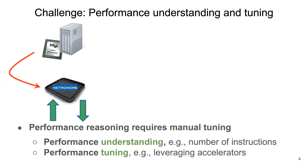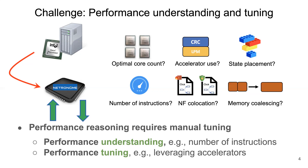To start with, developers would like to know the expected offloading performance before too much effort goes into the manual porting process, so that they can make decisions on whether the SmartNIC is a good offloading target. Additionally, developers might also want to leverage platform-specific tuning opportunities, such as hardware accelerators, specialized compute units, and heterogeneous memory regions with different access latencies. These are all challenging tasks because they require deep domain knowledge on SmartNIC architecture. To summarize, due to the vast difference between host server and SmartNIC platforms and the absence of NIC expertise, obtaining performance understanding is difficult, while performance tuning is even harder.